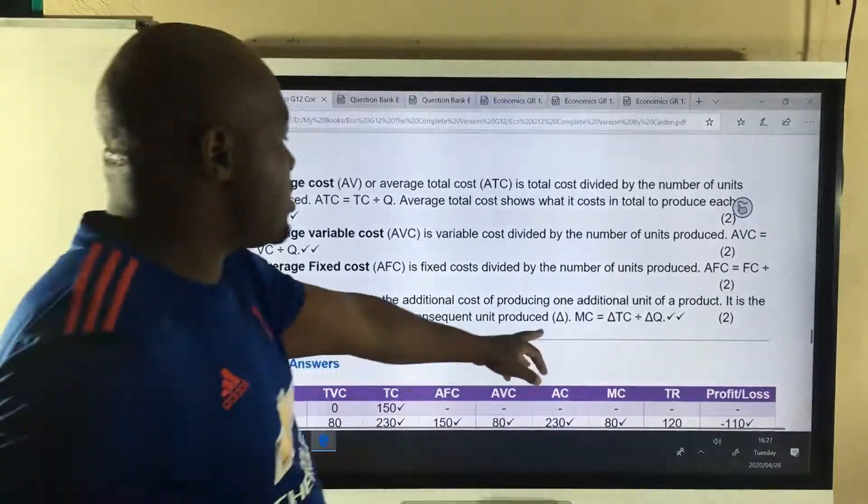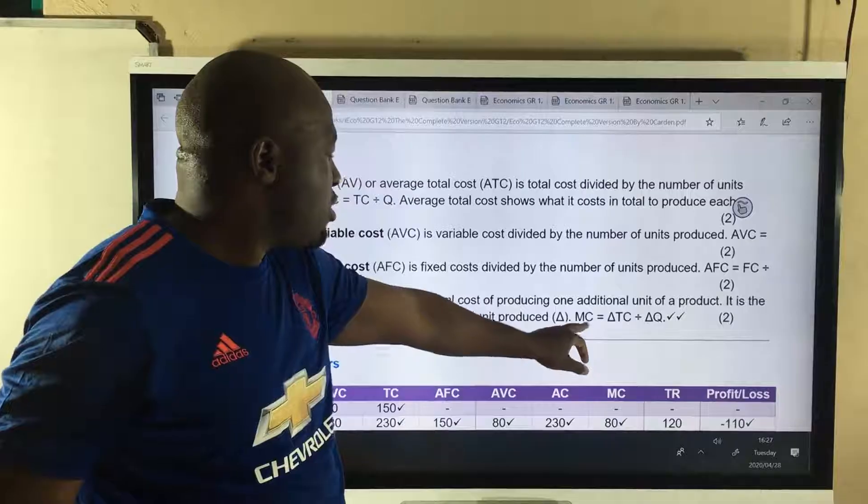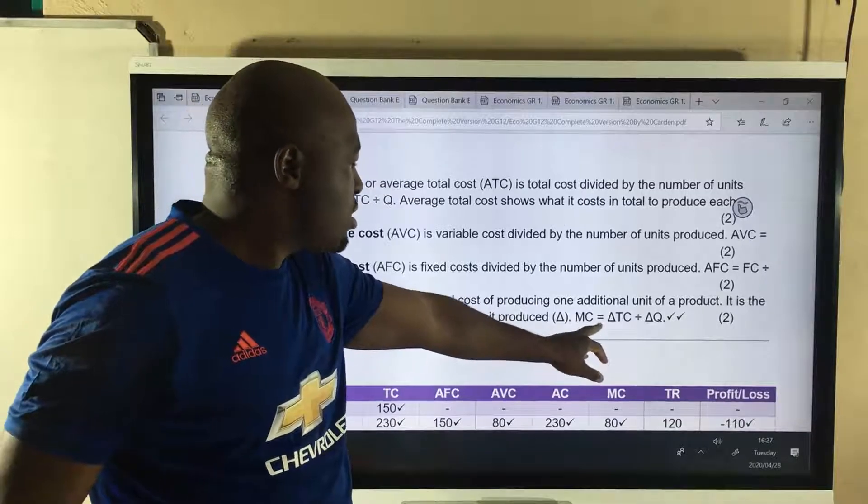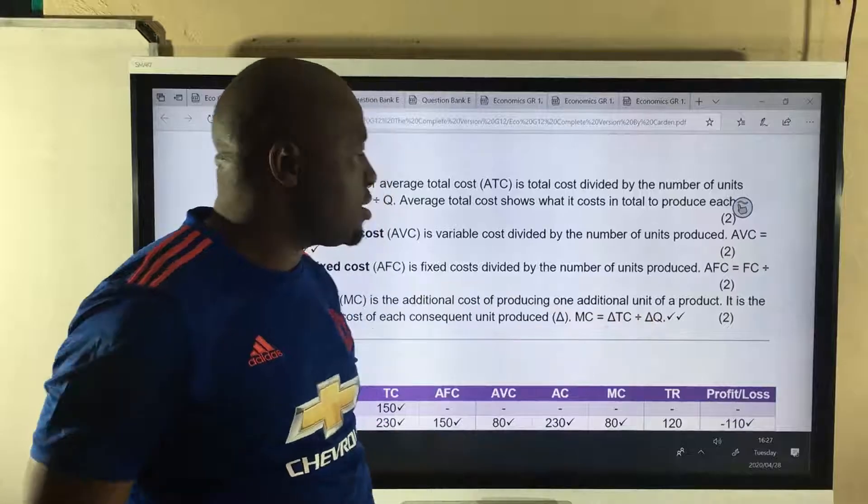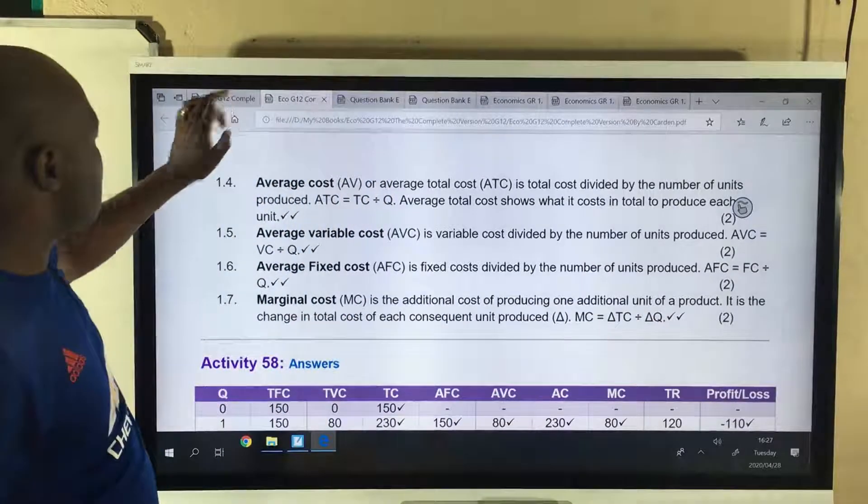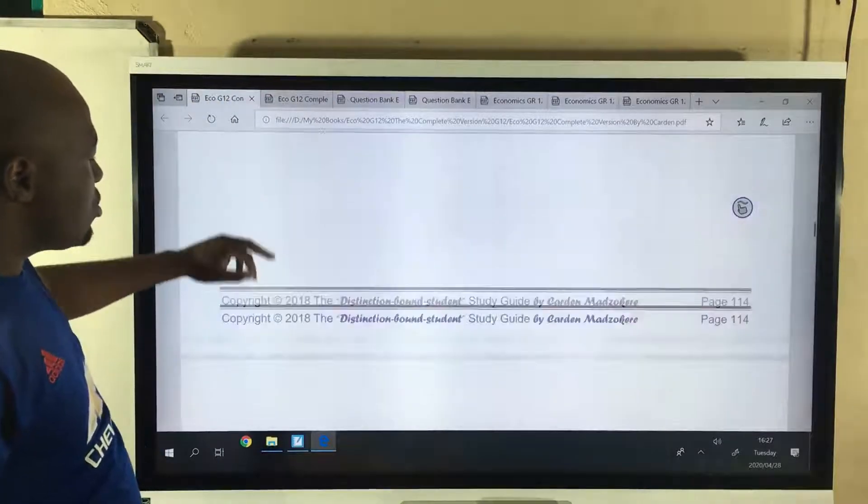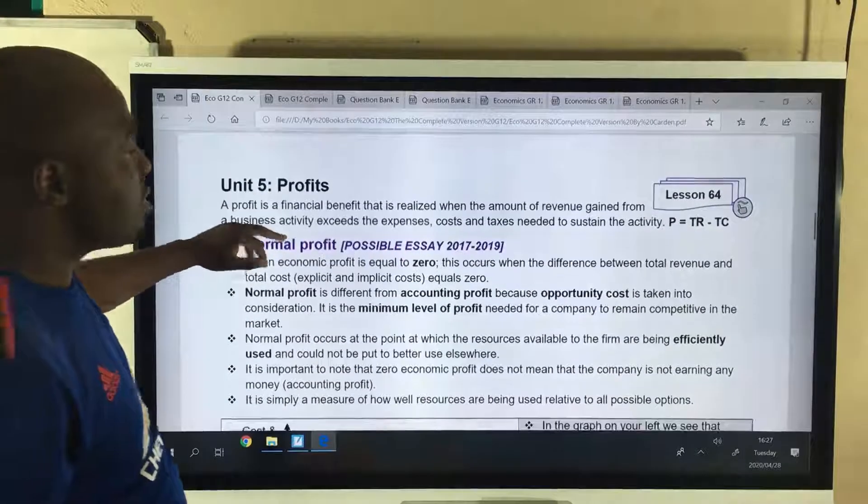Yes, the last one I did is this one. Marginal cost is equal to change in total cost divided by change in quantity. It's as easy as that. Let's go to the next lesson, which is lesson number 64.